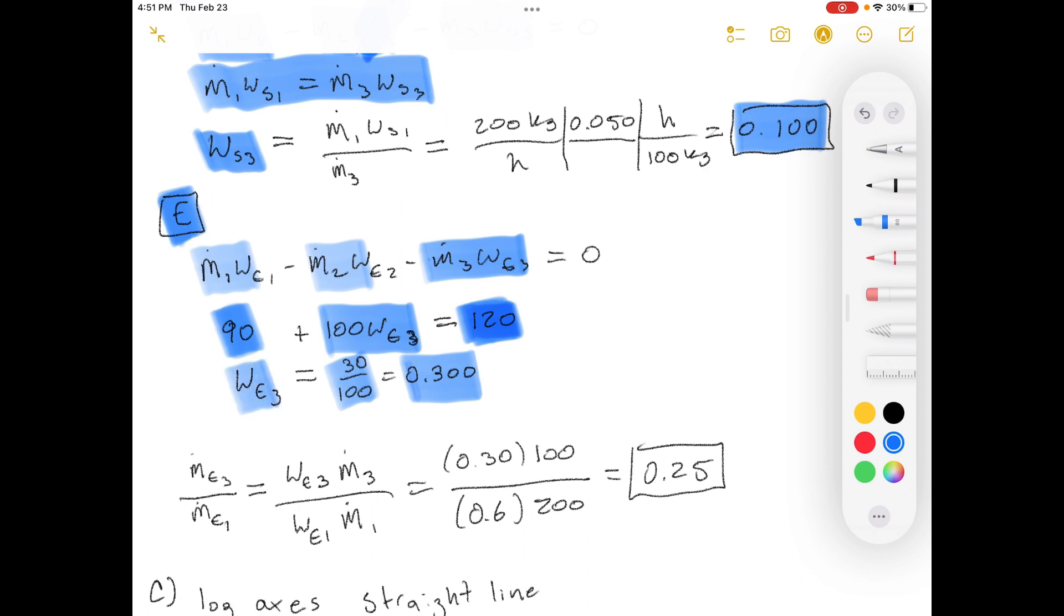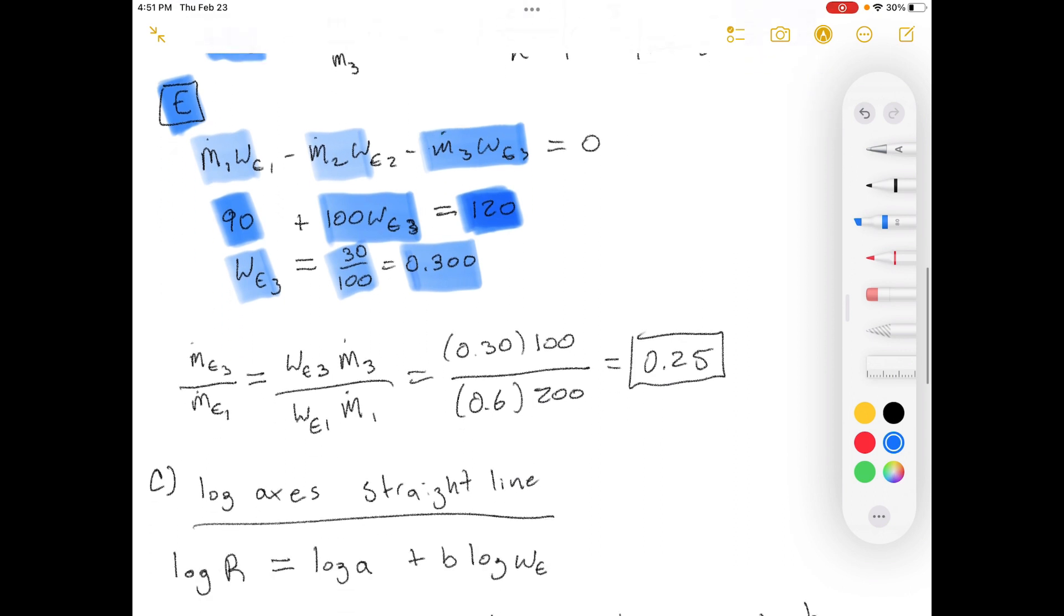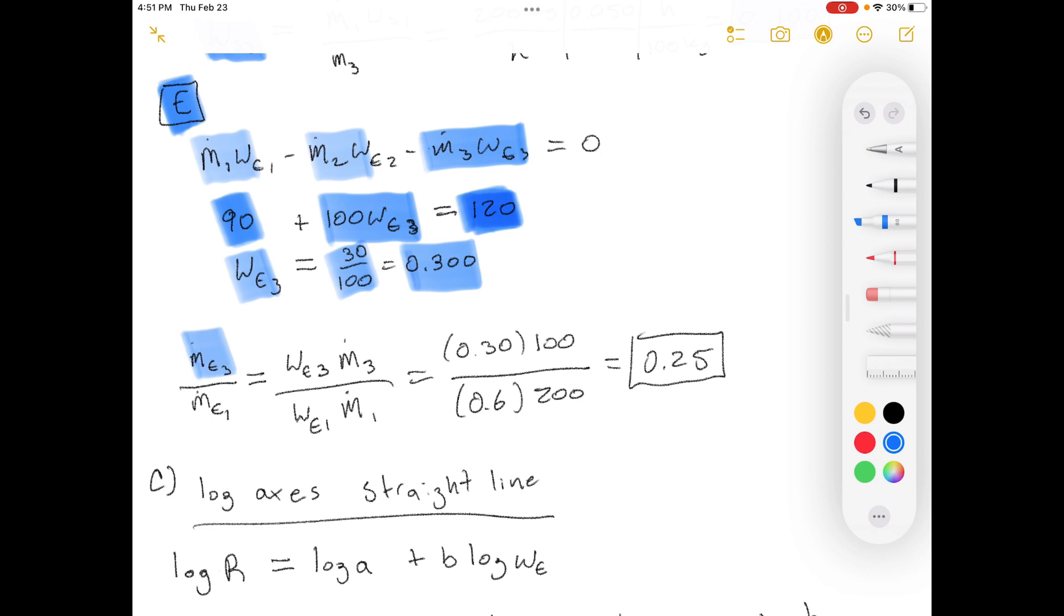Okay. Now we have the ingredients we need. The weight fractions in stream three and stream one in order to calculate the ethanol fractions that they wanted us to calculate. So we've got our mass flow rates of ethanol in stream three over mass flow rate of ethanol in stream one. Break those up into what we know. Those are the numbers. And we're left with zero point two five as a fraction of recovery.